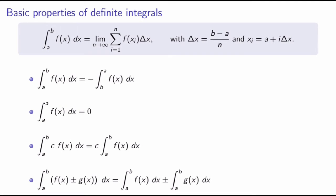Here are properties that follow directly from the definition of definite integrals. First: the integral from a to b equals minus the integral from b to a. Exchanging a and b changes the sign of delta x, so it changes the overall sign of the integral. Second: if you integrate from a to a — the same point for both limits — you get zero. That's clear from the definition since delta x equals zero and the entire summation goes to zero.